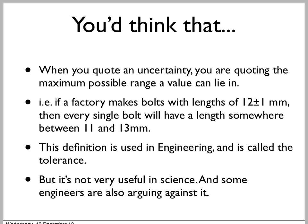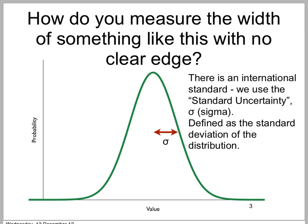Why not? It seems pretty intuitive — if you say something is 4 plus or minus 1, it must be between 3 and 5. Well, the trouble is the Gaussian curve. It doesn't have a nice sharp edge. If the curve looks something like this, then a tolerance would be a very good definition.